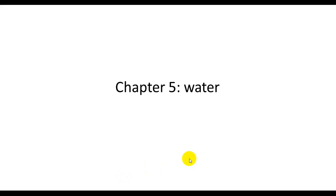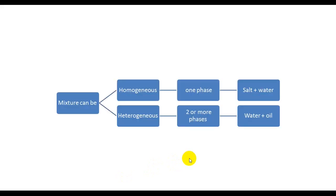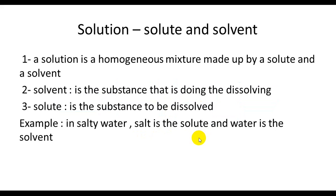But first of all, let's remember some definitions that we've learned earlier. We all know that a mixture could be homogeneous, made of one phase, or heterogeneous, made of two or more phases. We also know that a solution is a homogeneous mixture made by a solute and a solvent.